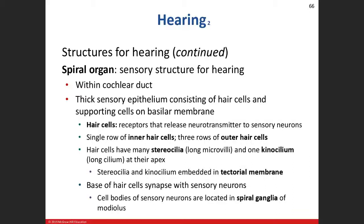The specific sensory organ of our hearing apparatus is the spiral organ — also called the organ of Corti. It sits inside the cochlear duct along the floor, right on top of the basilar membrane. In this structure we have hair cells: one row of inner hair cells and three rows of outer hair cells.